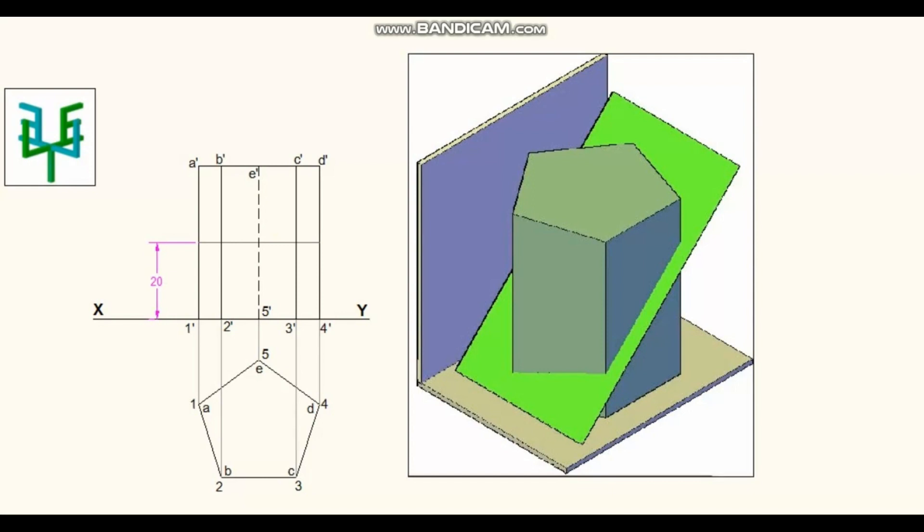Mark the midpoint of the invisible edge. Draw a 45-degree cutting plane through this point. Identify the points wherever the cutting plane cuts the edges of prism, and name it as